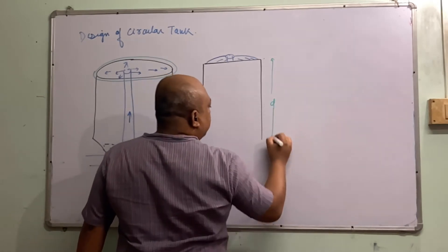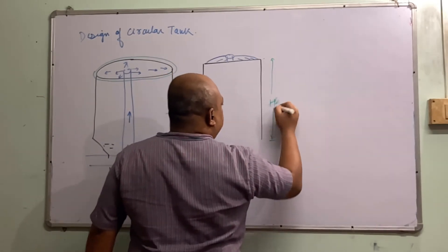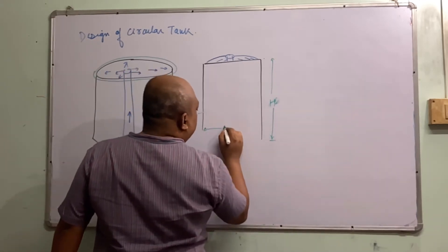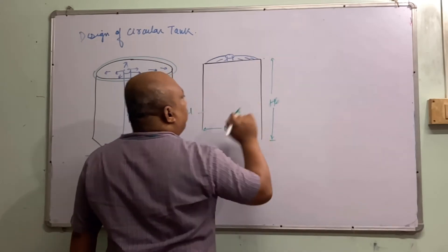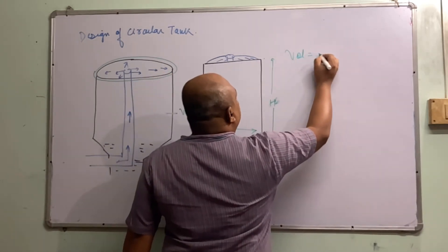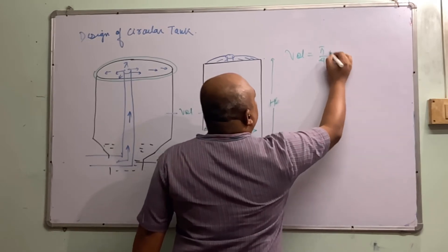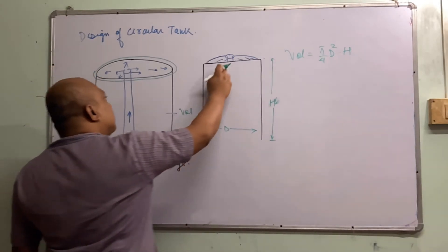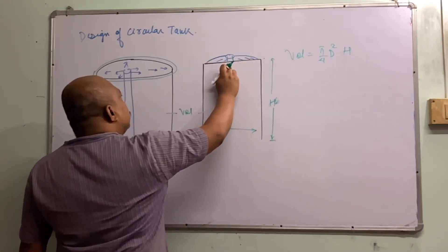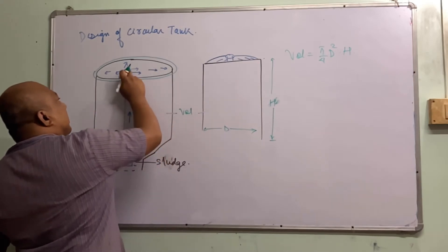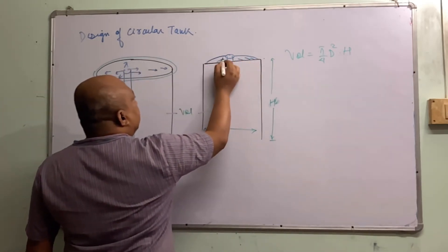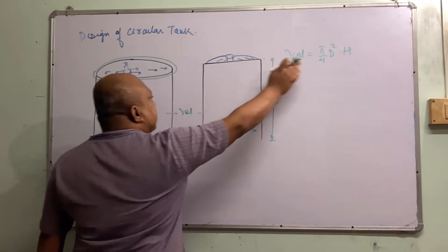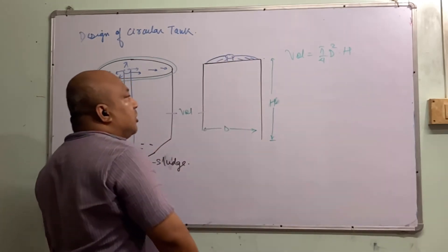The height and diameter of the tank are such that the volume should be pi/4 × D² × H. However, since the surface of the water is not completely straight — the inlet pipe is slightly at the top and the water flows in a parabolic or spherical shape — the volume is not exactly that formula.